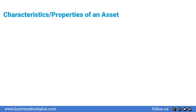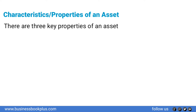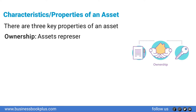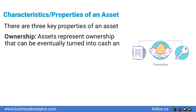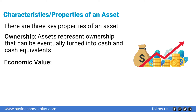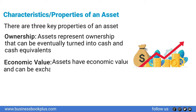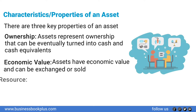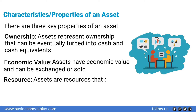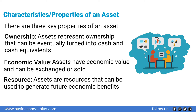There are three key properties of an asset. Ownership: assets represent ownership that can be eventually turned into cash and cash equivalents. Economic value: assets have economic value and can be exchanged or sold. Resource: assets are resources that can be used to generate future economic benefits.